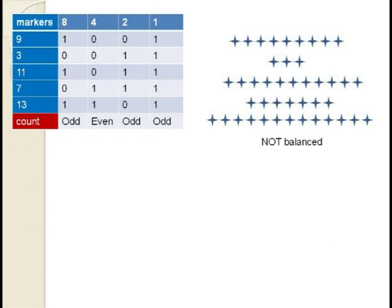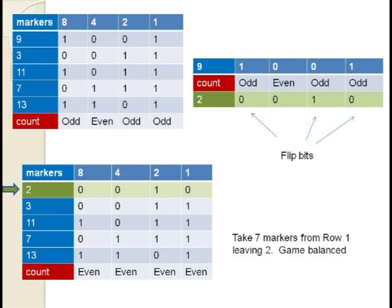Here's another example. This game currently has 5 rows with 9, 3, 11, 7, and 13 markers. In looking at the table, we can see that the columns for 1's, 2's, and 8's have an odd number of 1's so that the table is not balanced. The columns for the 8's is the highest power of 2 that's not balanced, so we want to work with one of the three rows that have a 1 in this column. Any one of these rows will work. Suppose we choose to work with the first row having 9 markers. We want to toggle the 1's and 0's in every column that's not balanced. In this case, the 4's column is balanced, so it stays the same. But all of the others are flipped.